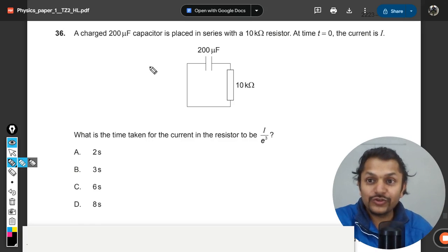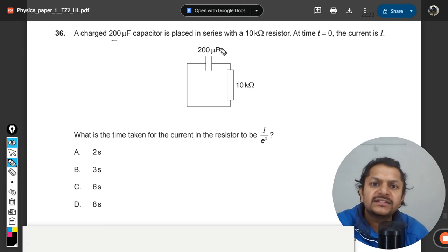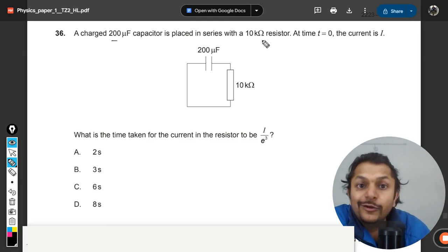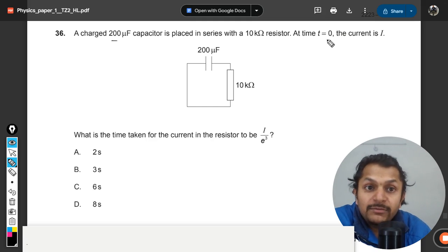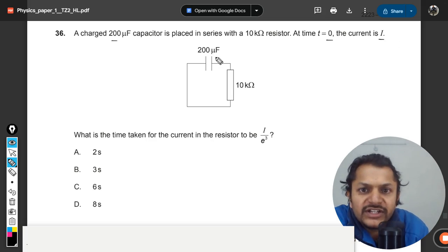Let's see what is there in this question. A charged 200 microfarad capacitor is placed in series with a 10 kilo ohm resistor. At time t equals zero, the current is i. This is about the discharging of a capacitor. Let's say this is positive and this is negative, so the current will start flowing. Clearly, it is the case of discharging of a capacitor.